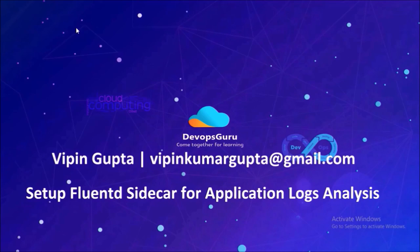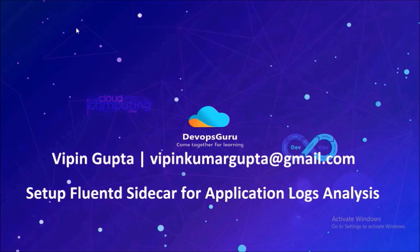There are two types of applications: cloud native applications and legacy applications. Cloud native applications write their logs to standard error or standard out, and these logs can be accessed using kubectl logs and the container name. There are many logging libraries available, and developers can use these to write application logs to standard error or standard output. Legacy applications, however, don't write their logs to standard error or standard output.